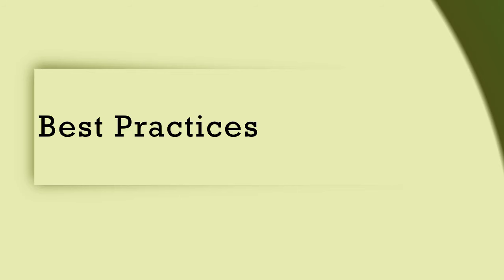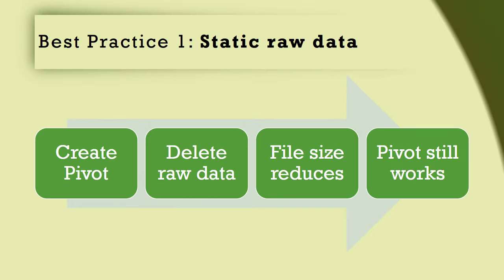How to use all this knowledge in practice? If the raw data is inside Excel itself and you are sure that the data is never going to increase or change, then follow this method: create the pivot table, make sure that the save data option is on, and then delete the raw data and save the file. This will reduce the file size drastically but the pivot table will still work.